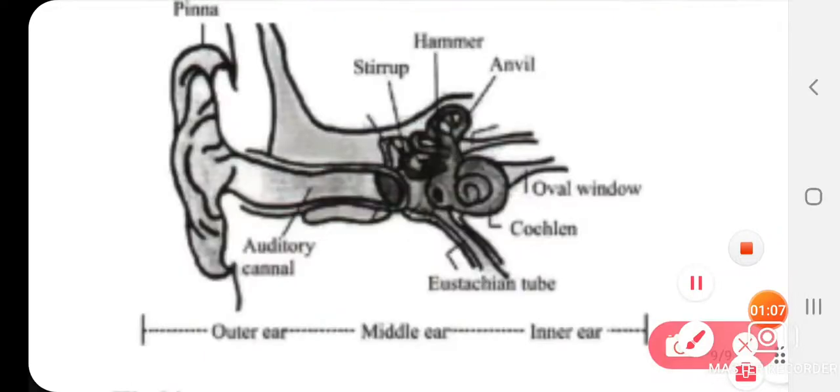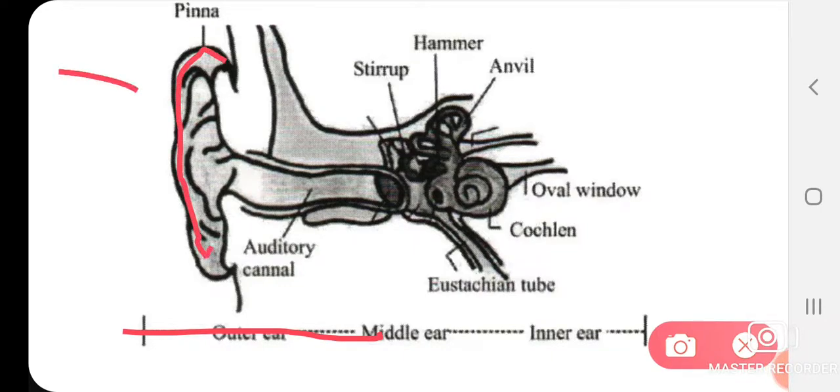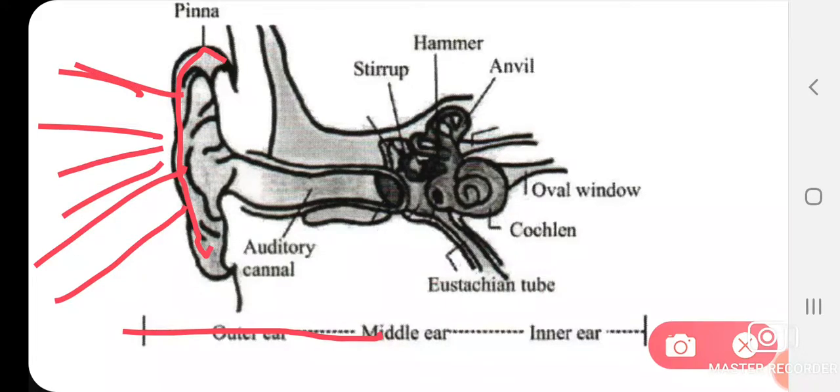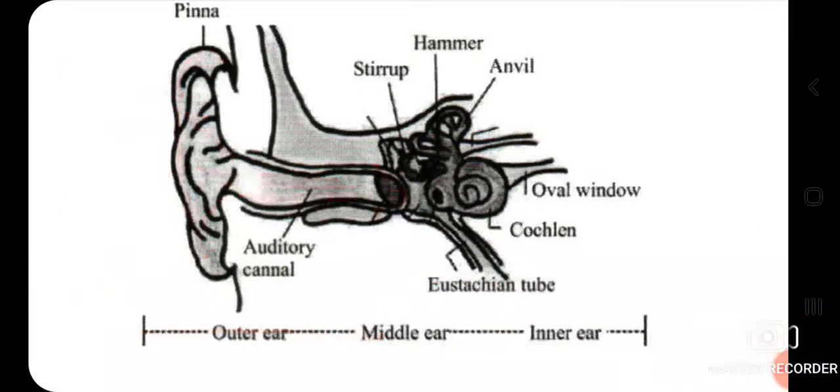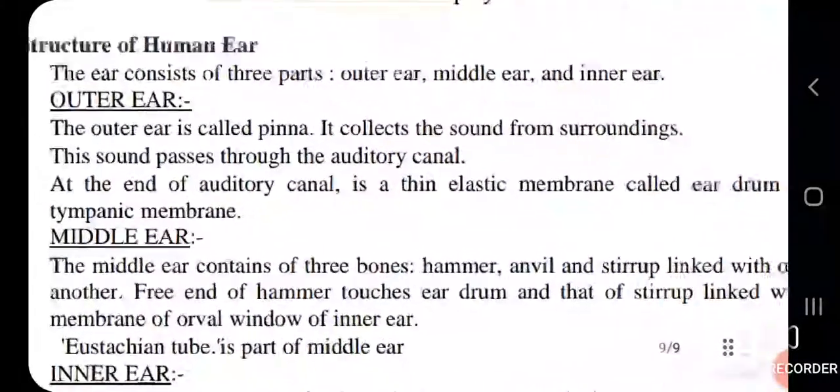Okay, so this is our outer ear. Here we have the pinna which collects sound from the surroundings. From the ear, sound passes through the auditory canal, and where the auditory canal ends, there is the ear drum.